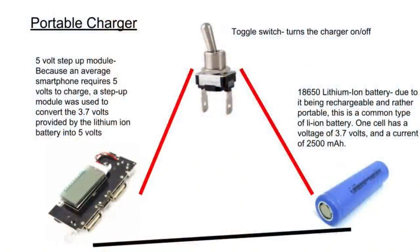Looking at another slide of the portable charger, there are three main components. First is the 5-volt step-up charger, which increases the voltage of the lithium ion batteries — normally they only provide 3.7 volts, but to charge a smartphone you need 5 volts. The second part is the switch, which allows me to turn the portable phone charger on and off. And the most important component, of course, is the lithium ion batteries.